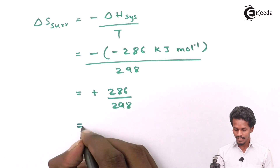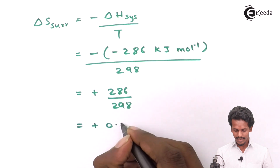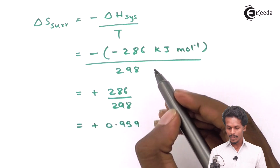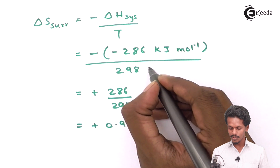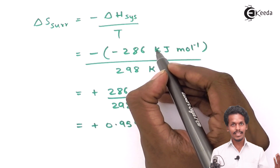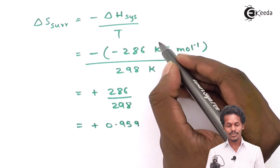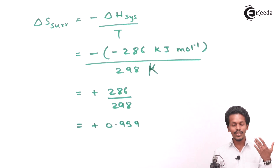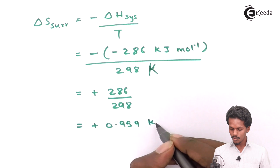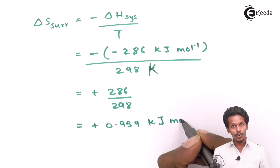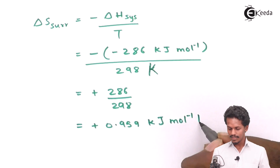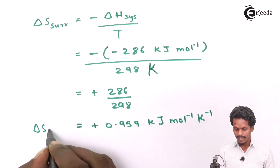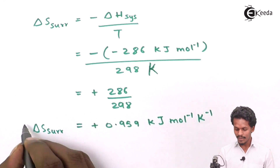The result is plus 0.959, and the unit is kilojoule per mole per Kelvin — do not confuse the small 'k' in kilo with the capital 'K' for Kelvin. So the entropy change of the surroundings is +0.959 kJ mol⁻¹ K⁻¹.